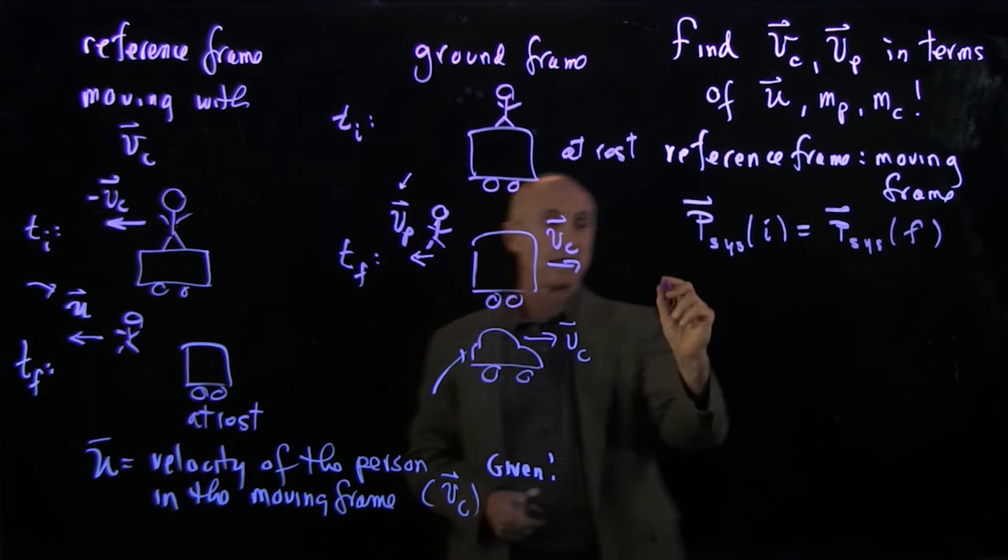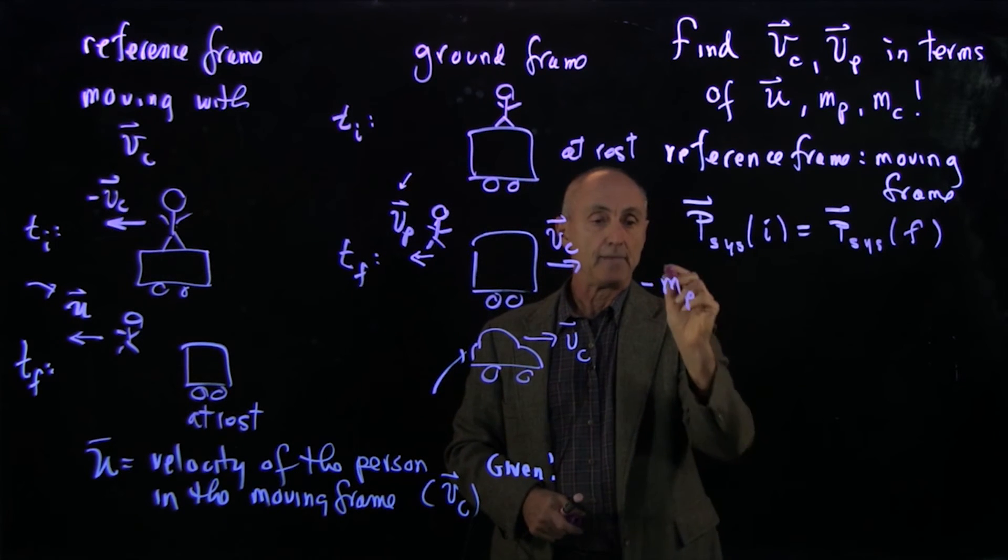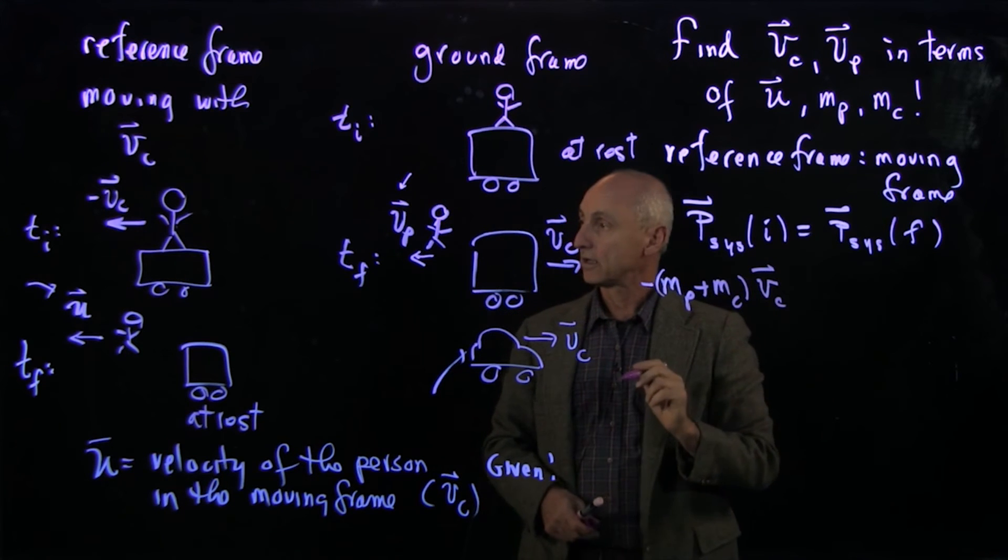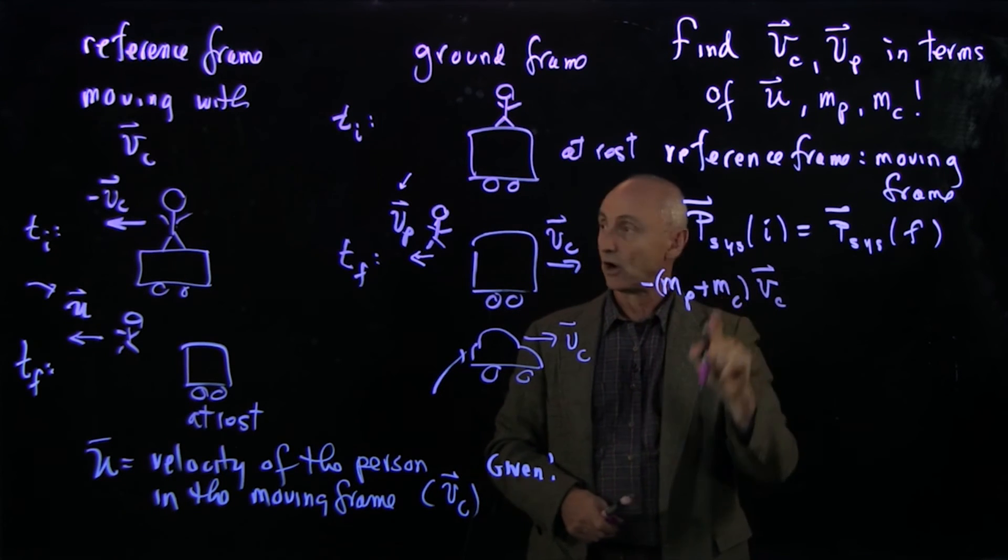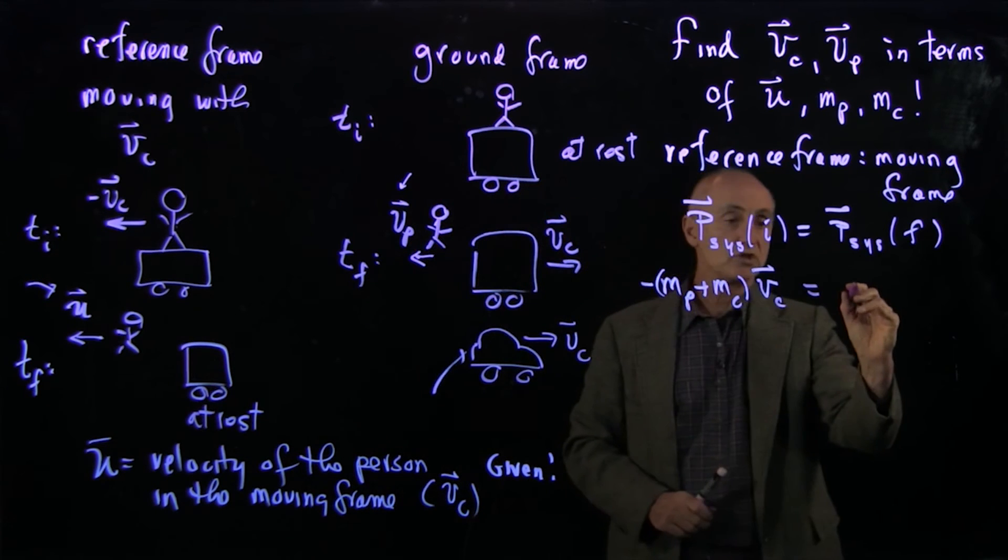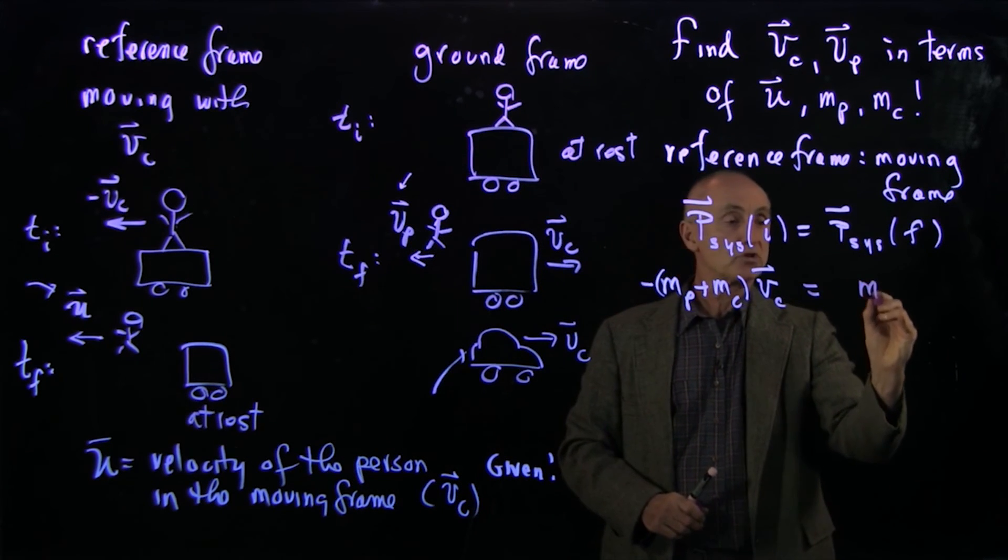Now the initial momentum is just minus mp plus m cart v cart. Notice the minus v cart. And the final momentum is equal to just m person u.